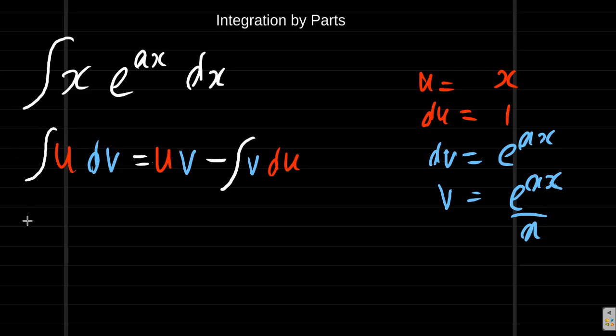What we have is that the integral of u, in this case x, dv, in this case e to the a x dx, that is equal to u, which is x, times v. By the way, dv is e to the a x dx and du is 1 dx. So here we have u which is x times v which is e to the ax over a, which then becomes uv.